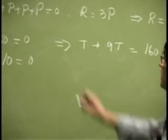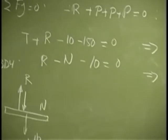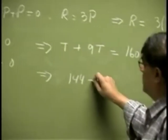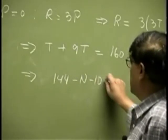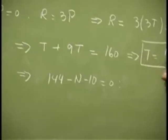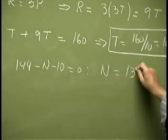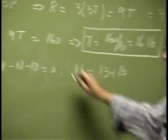Then from this equation, we found R, that is 144. Then you have N minus 10 equals to 0, and that gives you N as 134 pounds.